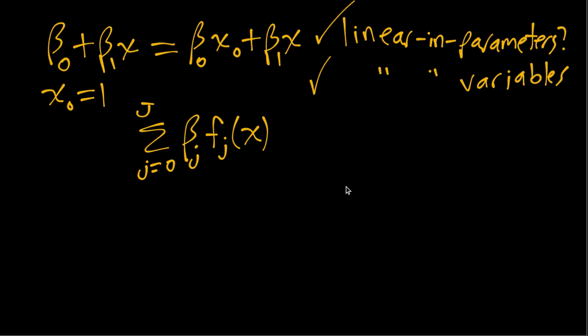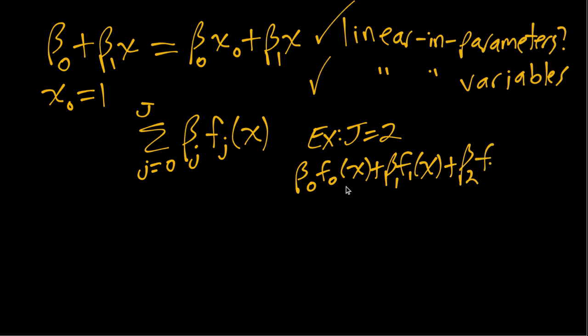So as one example if we had j equals two you can write out beta naught f naught x plus beta one f one x plus beta two f two of x. If we imagine f naught x is just equal to one, f one x is just x, and f two x is x squared, then we can see we get beta naught plus beta one x plus beta two x squared.